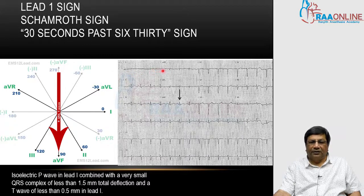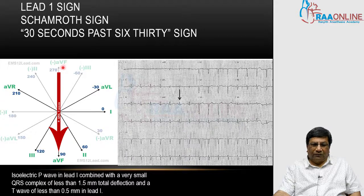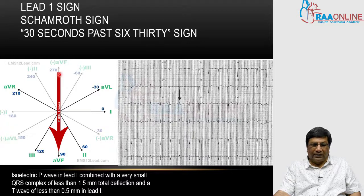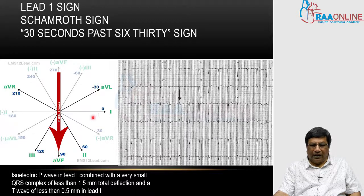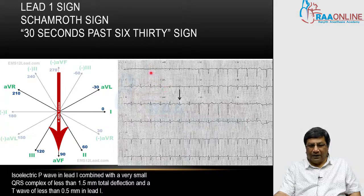There is another interesting term for this sign, which is called the '30 seconds past 6:30' sign. For example, imagine a clock — what will be the position of all three hands, the seconds hand, the minutes hand, and the hours hand, when the time is 6:30 and 30 seconds? They will all be in the same line. Similarly, the P wave axis, QRS axis, and T wave axis are all in the same line, making every wave in L1 isoelectric. This L1 sign is a very typical and important ECG sign to diagnose a patient with chronic COPD.